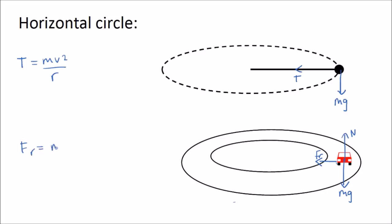So Fr equals mv squared over r in this case. And that's why cars skid when friction is reduced by ice or by water on the road, because this force is not large enough to maintain circular motion.